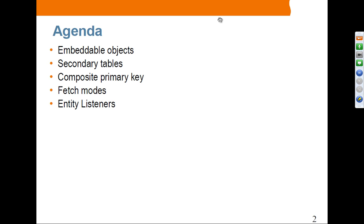Here we are going to talk about embeddable objects, secondary tables, and composite primary keys. We have an example in our previous presentation on compound keys or composite key, and fetch mode. We already know the concept of fetch mode and entity listeners.